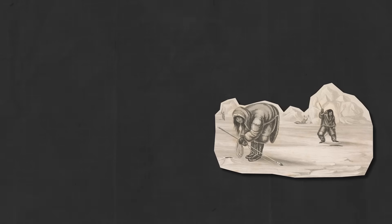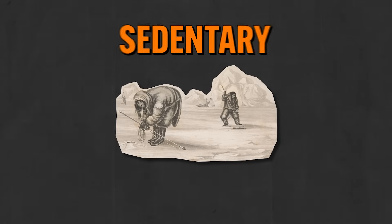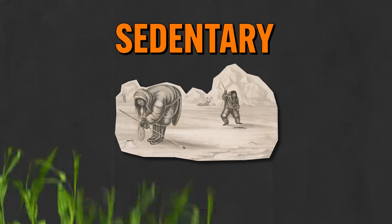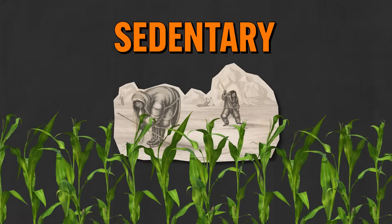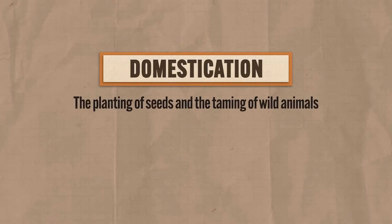But at some point, somebody figured out something revolutionary: namely that you didn't have to keep moving from place to place in order to harvest food grown in the wild. Instead, you could just stay in one place — become sedentary — and plant food in the ground on purpose. Moreover, you could take wild animals and bring them under your care and use them for work and to eat. The planting of seeds and the taming of wild animals is what we call domestication.